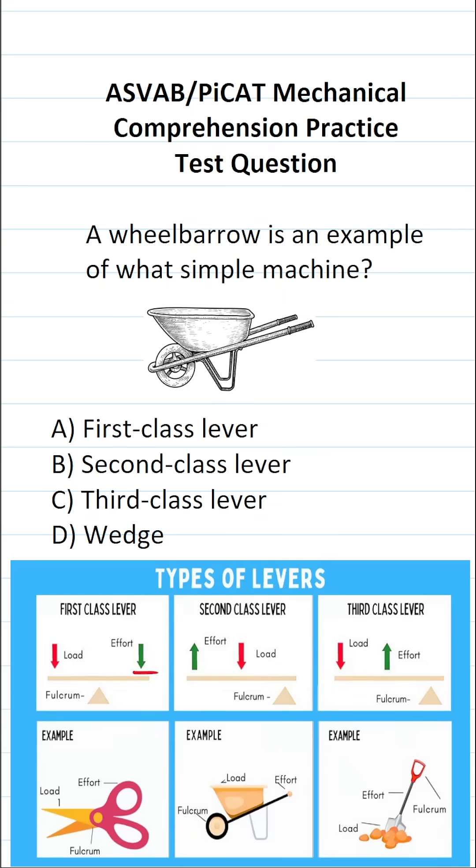This mechanical comprehension practice test question for the ASVAB and PiCAT says, a wheelbarrow is an example of what simple machine?